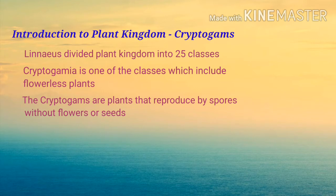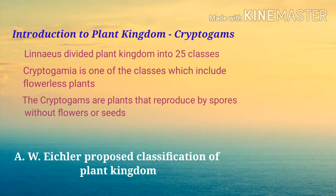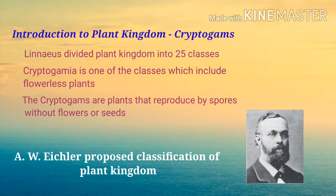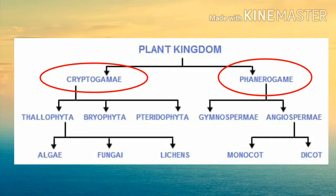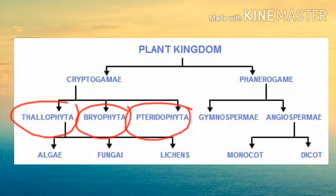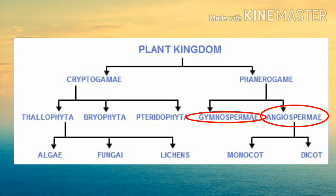In cryptogams there are no flowers or seeds, but spores — they reproduce by spores. There was another scientist, August Eichler, who proposed the classification of plant kingdoms. The plant kingdom is divided into two groups: cryptogams and phanerogams. Cryptogams are divided into thallophyta, bryophyta, and pteridophyta. Phanerogams are divided into gymnosperm and angiosperm. Thallophytes are divided into algae, fungi, and lichens, and angiosperms into monocots and dicots.